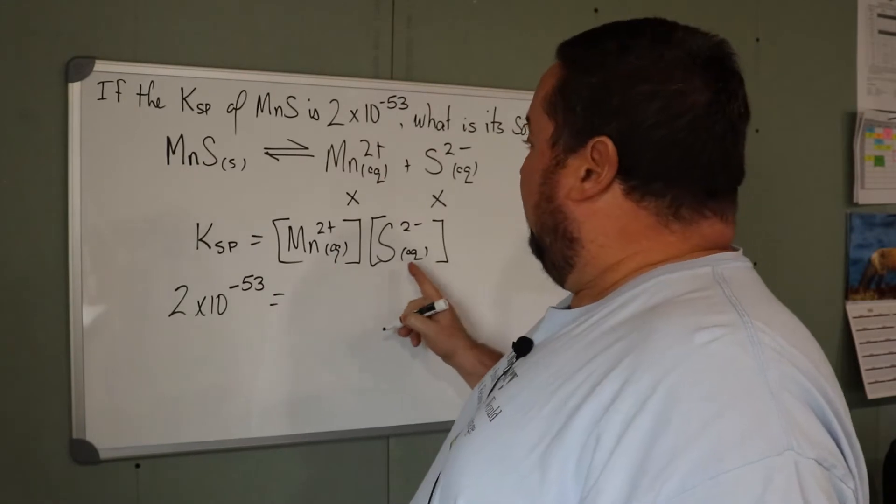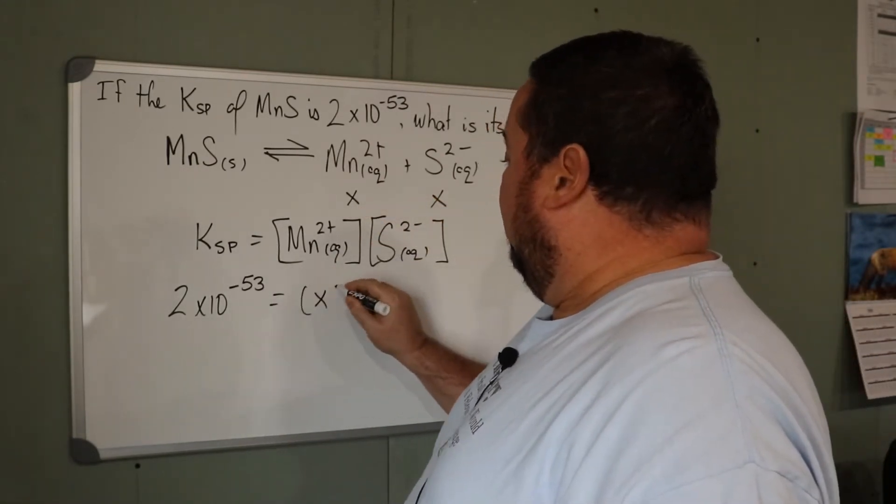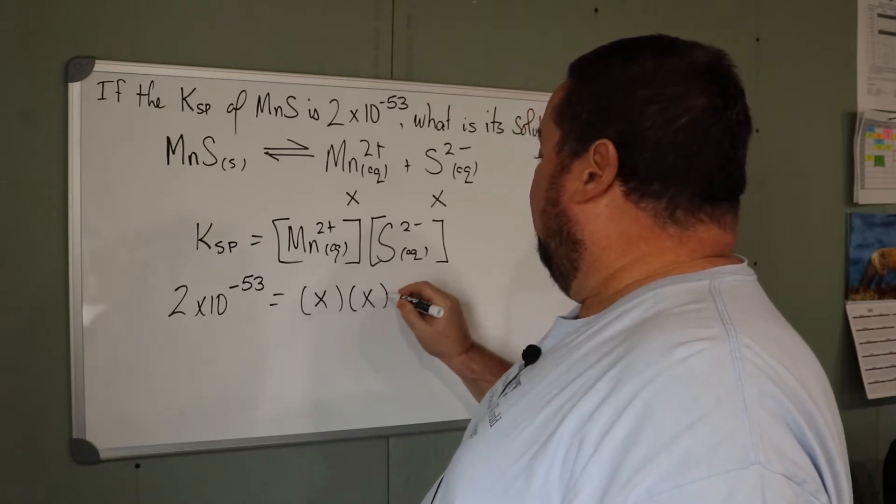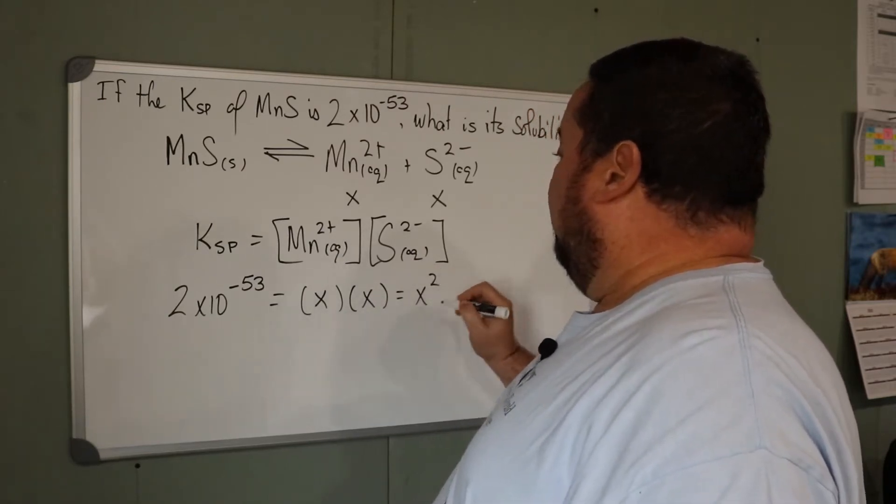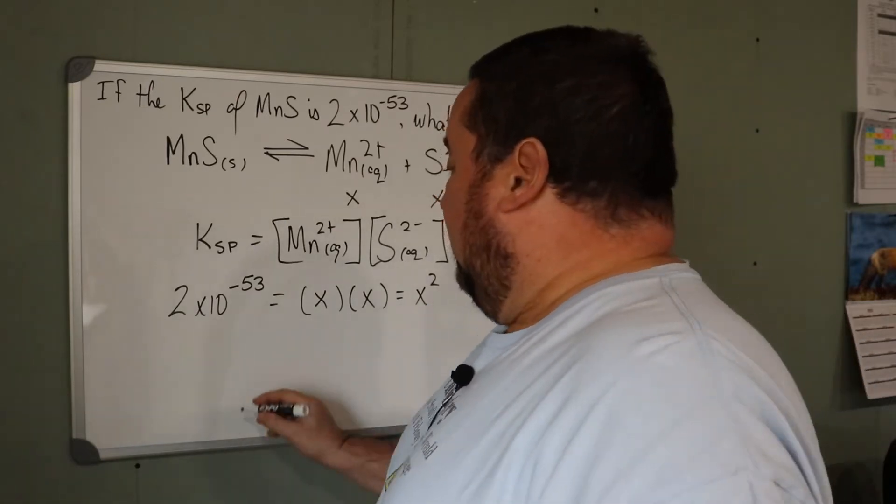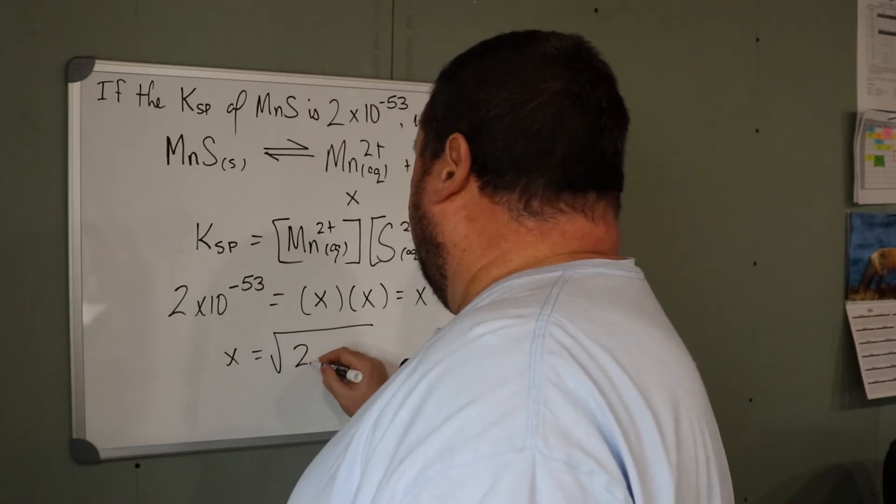And the values for the concentration that we've determined, X and X. In other words, X squared.